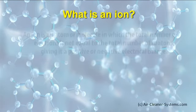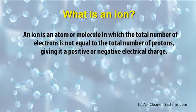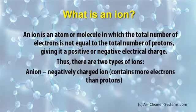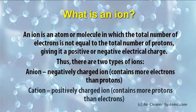What is an ion? An ion is an atom or molecule in which the total number of electrons is not equal to the total number of protons, which gives it a positive or negative electrical charge. Thus, there are two types of ions. An anion is a negatively charged ion, which contains more electrons than protons. A cation is a positively charged ion, which contains more protons than electrons.